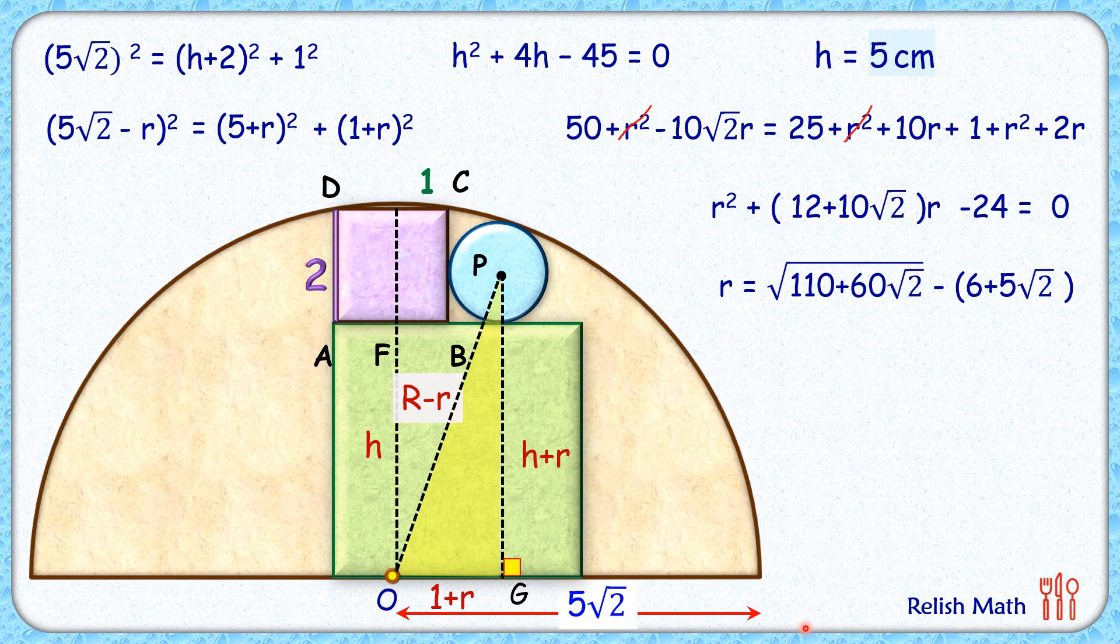Solving it by using quadratic formula will get small r is √(110 + 60√2) - 6 - 5√2 cm, which on simplifying will get small r as 0.89 cm and that's our answer.